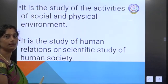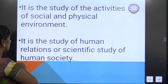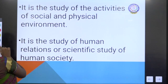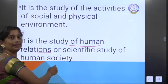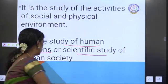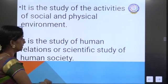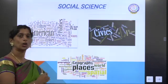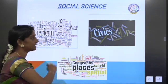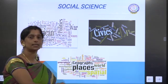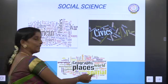It is the main purpose of Social Studies. It is also the study of human relations — it is a scientific study of human society. What are all we going to study in Social Science? The first is History, the next is Civics, and the third one is Geography. These three are the major divisions of Social Science.